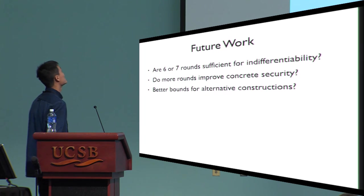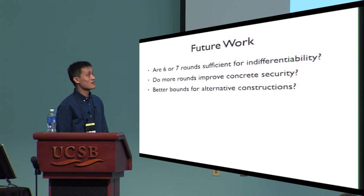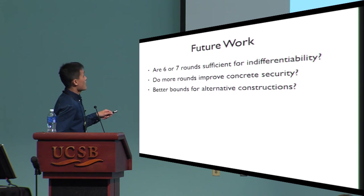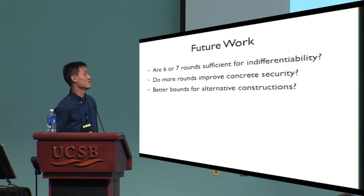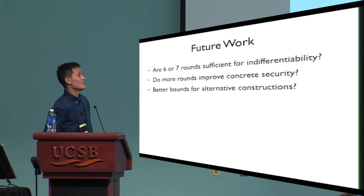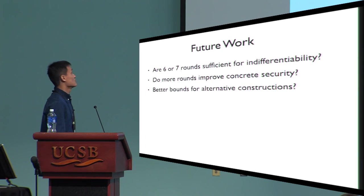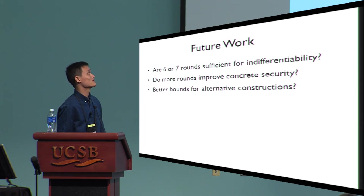Looking ahead, we currently have an attack against 5-round Feistel and a proof for 8-round Feistel, leaving a gap of two rounds to close. Can we use more rounds to improve concrete security? Our proof achieves a very poor security bound because we aimed at reducing the number of rounds. Can we prove a better bound using more rounds, or even prove the birthday bound for, say, a 20-round Feistel? We can also consider alternative constructions like a swap-or-shuffle, and ask whether we can prove indifferentiability bounds and better bounds for these constructions.